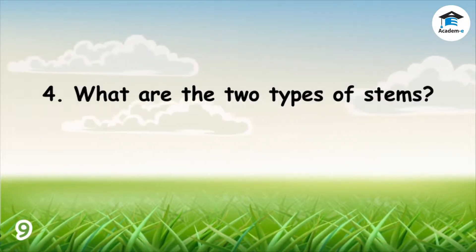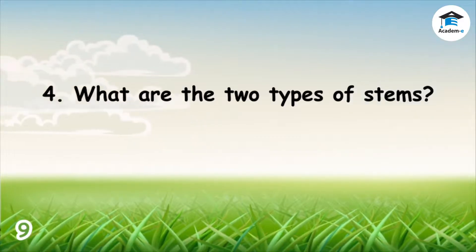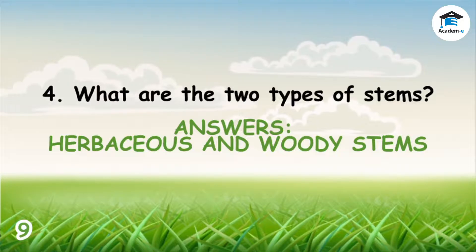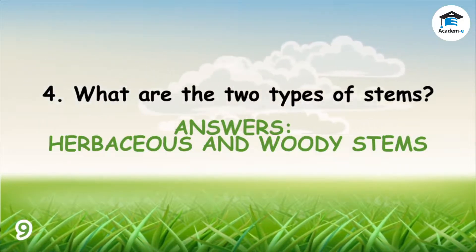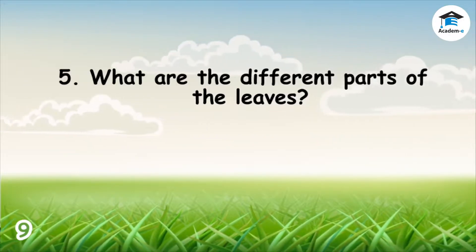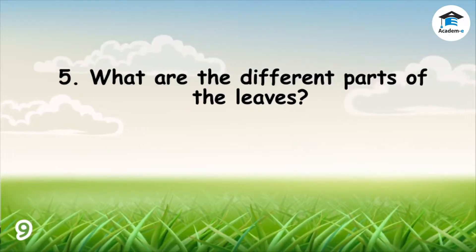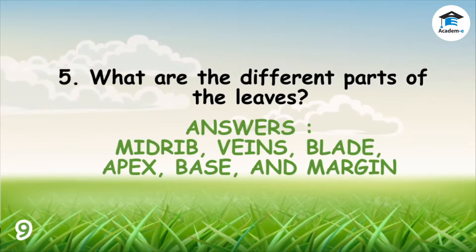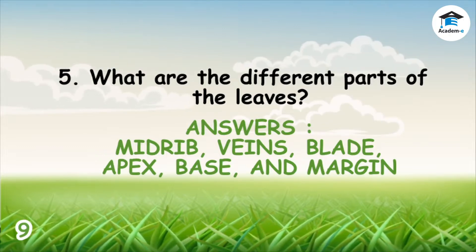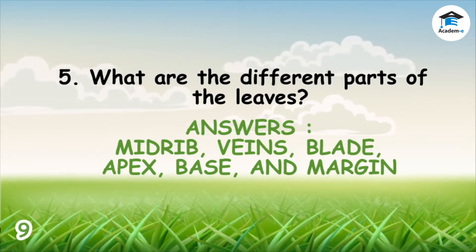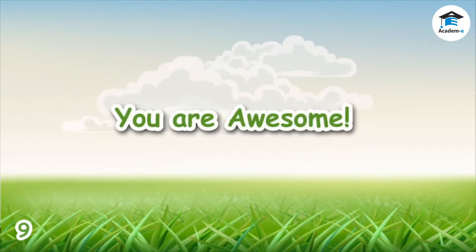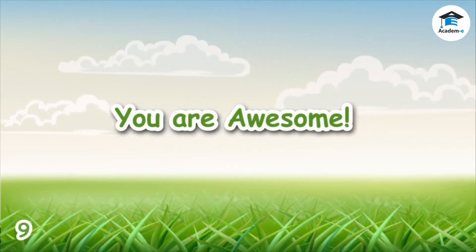Four: What are the two types of stems? The answers are herbaceous and woody stems. Five: What are the different parts of the leaves? The answers are midrib, veins, blade, apex, base, and margin. You got them right — thank you!